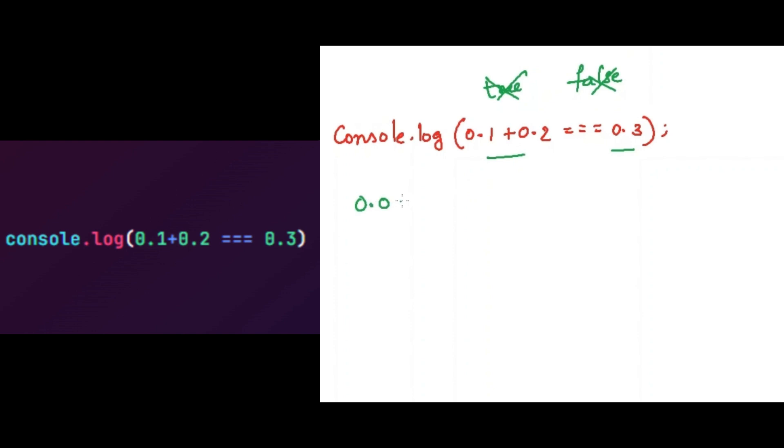Now as we are comparing these floating point values by using the strict equality operator, it will return false because the strict equality operator will compare the exact values, but this is slightly greater than 0.3, so it will return false. Now the interviewer will ask you a question: how do you compare these floating point values then?